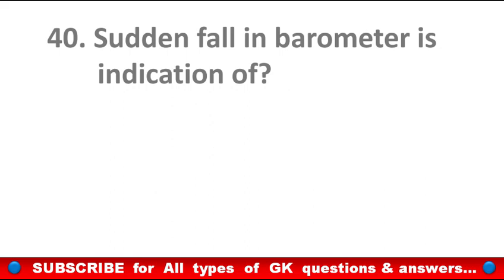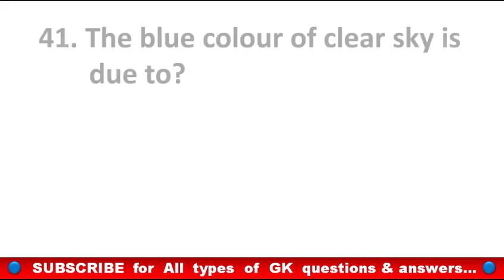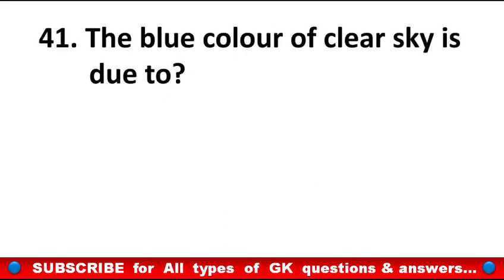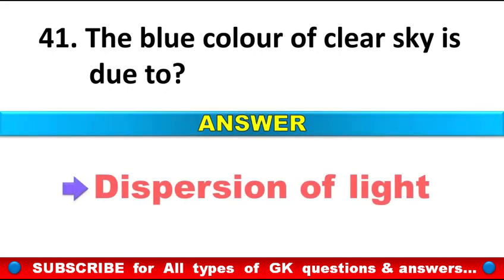Sudden fall in barometer is indication of? Answer: Storm. The blue color of clear sky is due to? Answer: Dispersion of light.